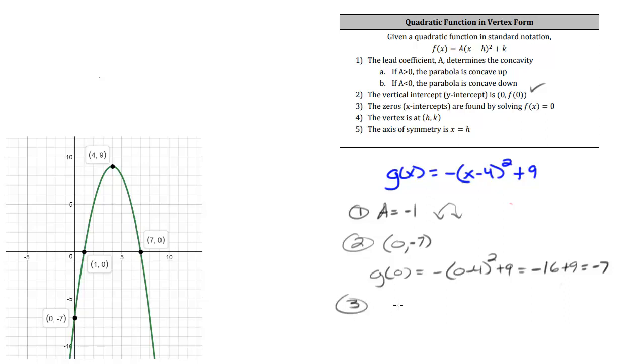Number three, I want to find the horizontal intercepts or the zeros of this function. I need to solve the equation zero equals negative x minus 4 squared plus 9. I'm going to do that over here on above this graph on the left. I could expand this and turn it into standard form and use the quadratic formula, but easier, I can just solve this using square roots. I'm going to subtract 9 from both sides to get negative 9 equals negative x minus 4 squared. I'm going to divide by negative 1 on both sides to get rid of the negative in front of the parentheses here to get 9 equals x minus 4 squared.